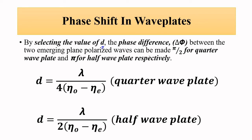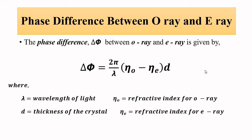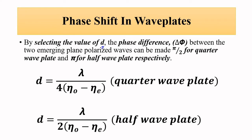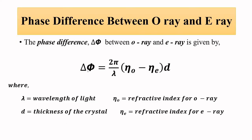The phase difference between the two emerging ordinary and extraordinary rays is deliberately made either π/2 or π. When the phase difference is π/2, it is called a quarter wave plate. When it is π, it is called a half wave plate. Everything is dependent on the crystal thickness.